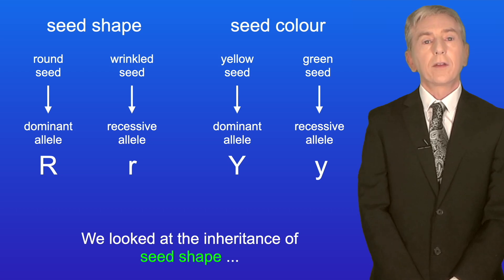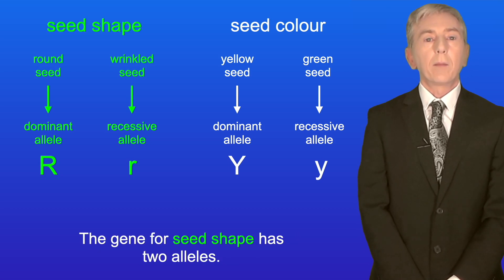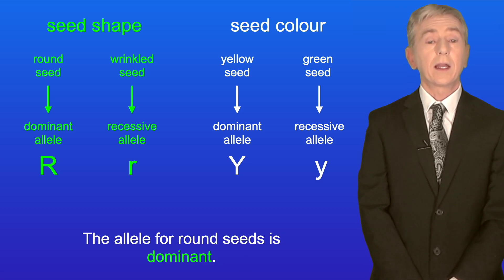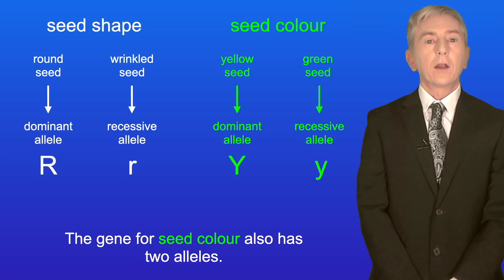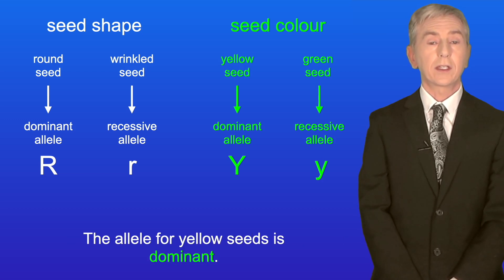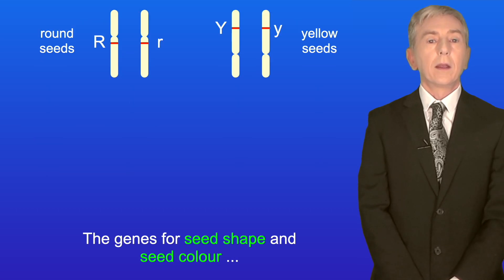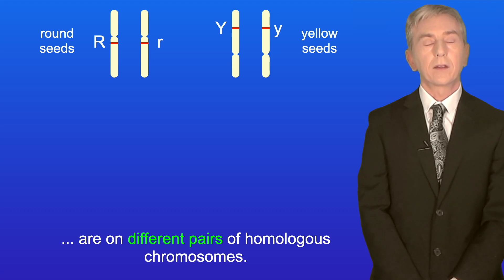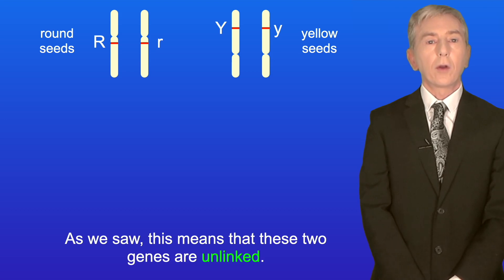We looked at the inheritance of seed shape and seed colour in pea plants. The gene for seed shape has two alleles: the allele for round seeds is dominant and the allele for wrinkled seeds is recessive. The gene for seed colour also has two alleles: the allele for yellow seeds is dominant and the allele for green seeds is recessive. The genes for seed shape and seed colour are on different pairs of homologous chromosomes, and this means that these two genes are unlinked.